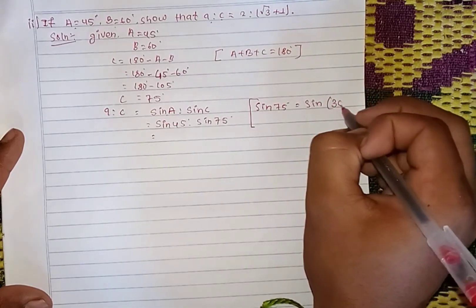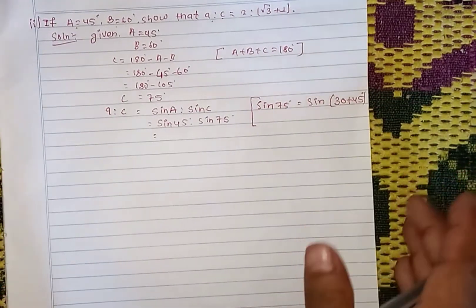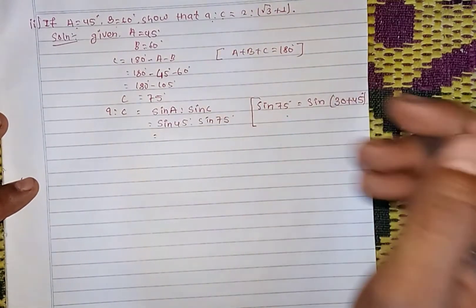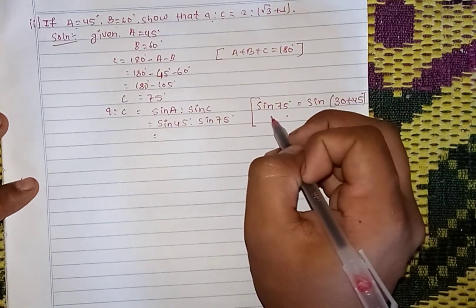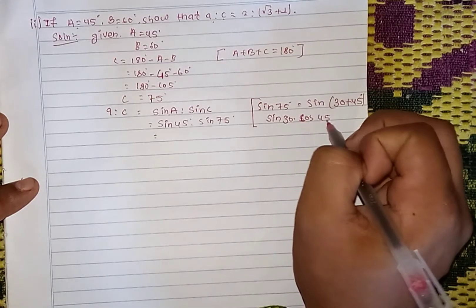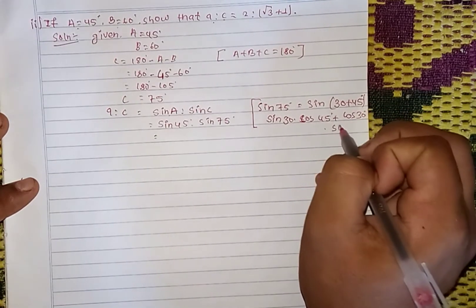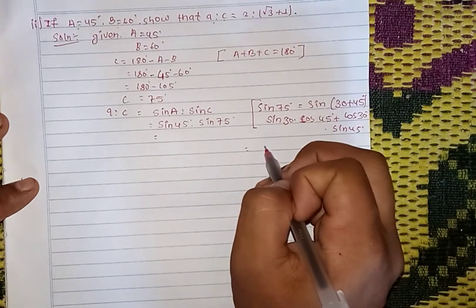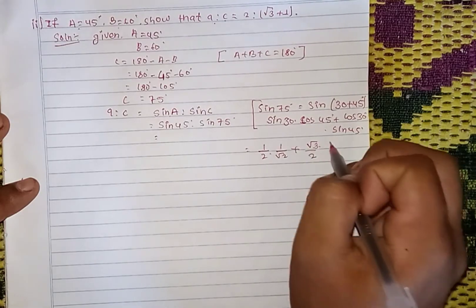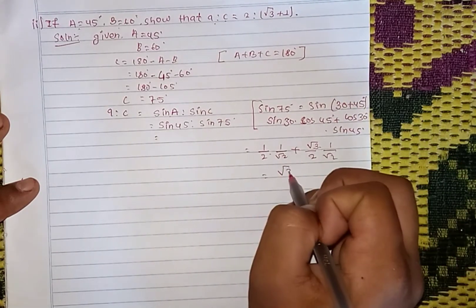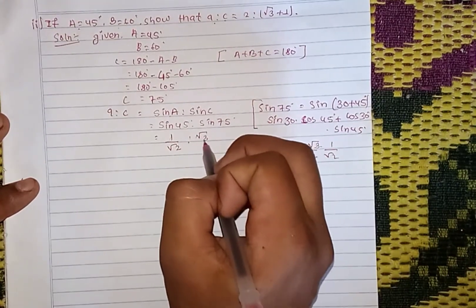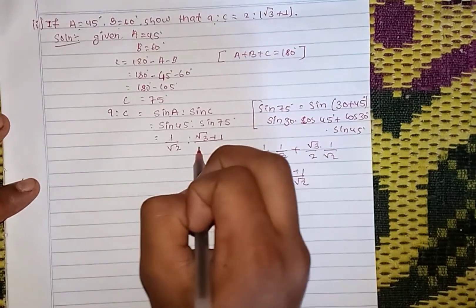For sin 75 degree, using sin(30 plus 45): sin 30 cos 45 plus cos 30 sin 45. Sin 30 is 1 by 2, cos 45 is 1 by root 2, cos 30 is root 3 by 2, sin 45 is 1 by root 2. So the value is root 3 plus 1 divided by 2 root 2.